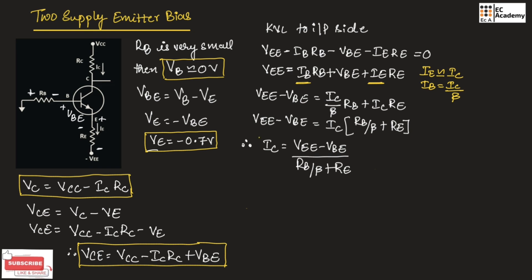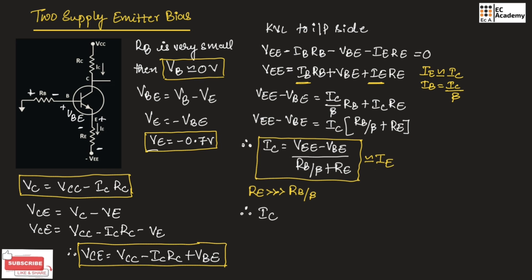This is the expression for Ic, which can also be used for finding Ie since Ic is approximately equal to Ie. In the above expression, if Re is very much greater than Rb/β, then we can simplify the expression of Ic to: Ic is equal to (Vee minus Vbe) divided by Re.